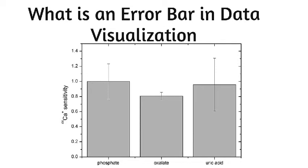Error bars always run parallel to a quantitative scale axis, so they can be displayed either vertically or horizontally, depending on whether the quantitative scale is on the y or x axis. If there are two quantitative scales, then two pairs of error bars can be used for both axes.